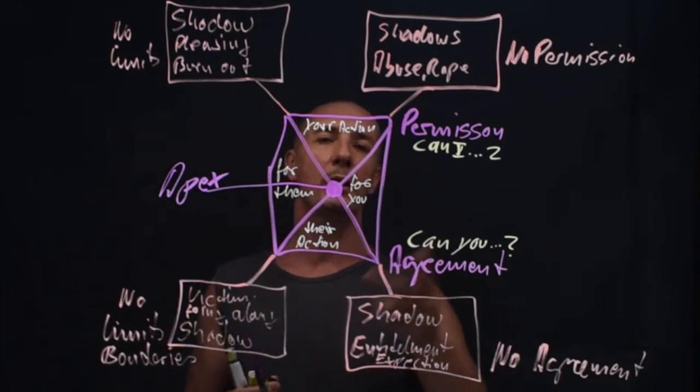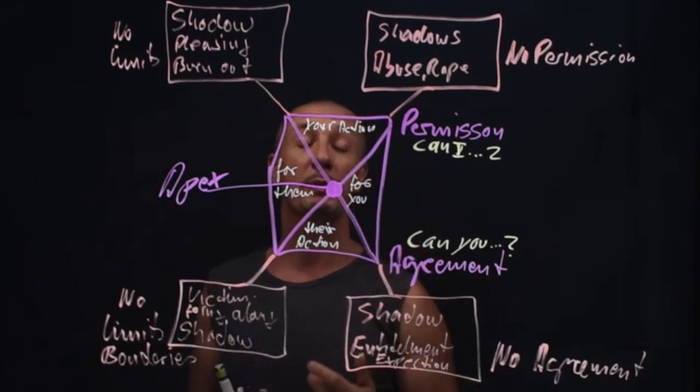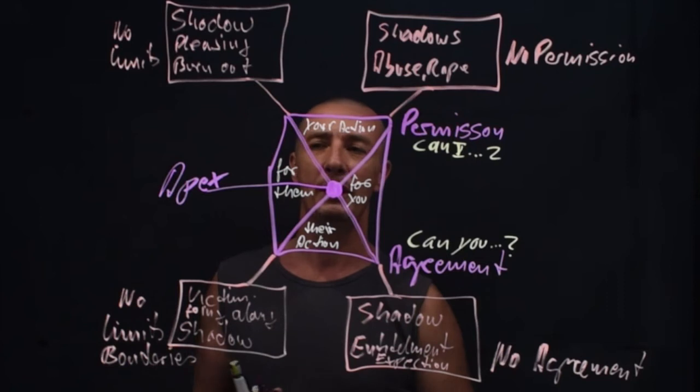And the apex is a very interesting point because this dynamic in here is either or, but what if two people are in action and what if it's for two people? Then it's not the shadows because then it's just only one person winning or is a power over dynamic. But in the apex, it's for both.